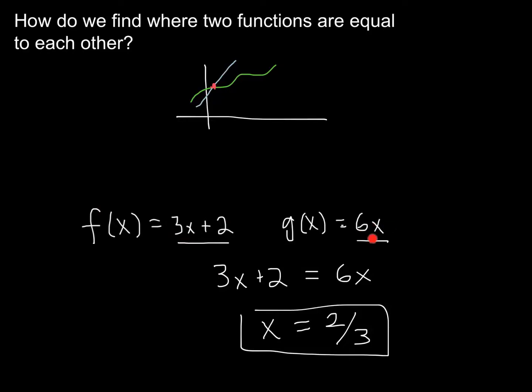And here you have 6 times 2/3. Well, 6 times 2 is 12 divided by 3 is 4. So we see that they end up being the same value when I plug in this x value. So there are multiple ways that we can find where two functions are equal.